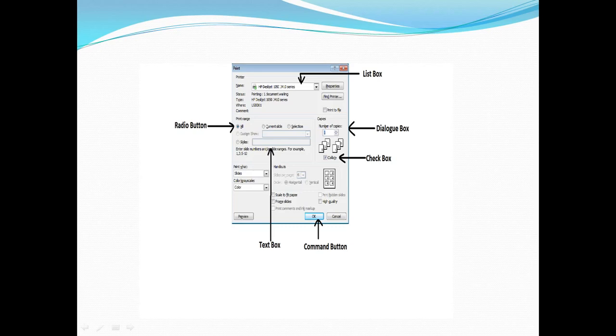We have to understand what is a list box, what is a radio button, what is a dialogue box, what is a check box, what is a command button, and what is a text box. This is very important for the beginner to understand all these different menu options.